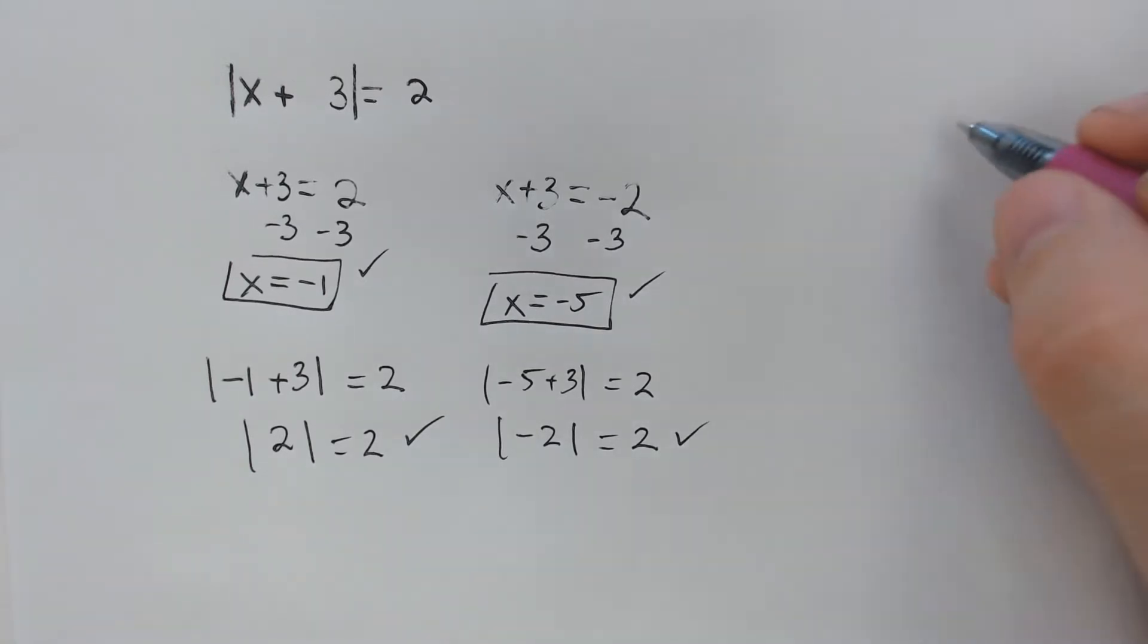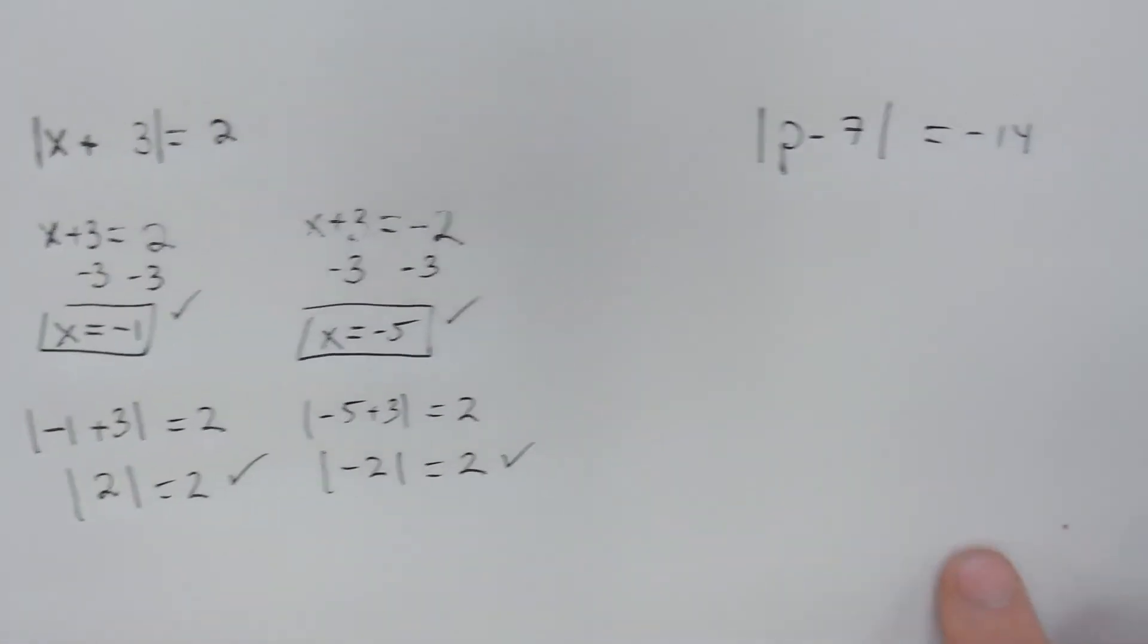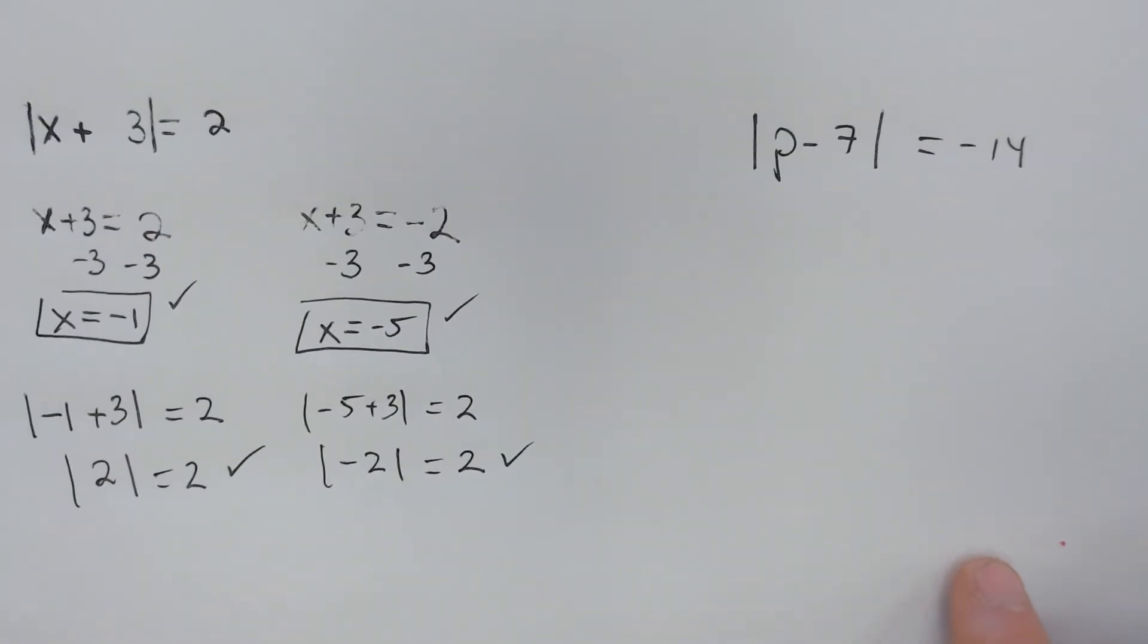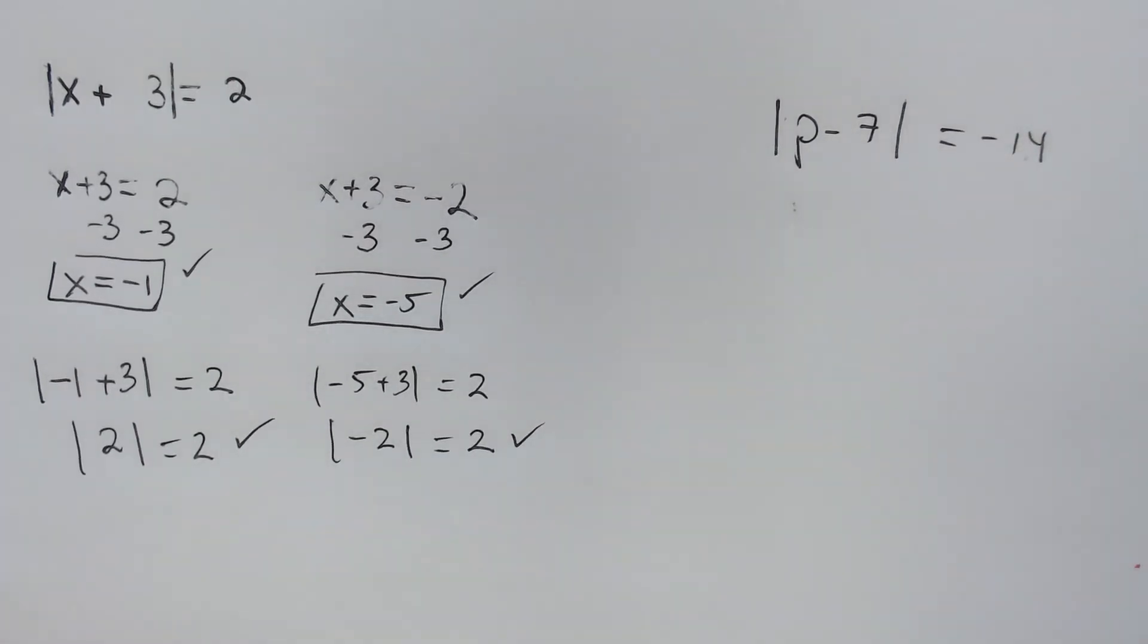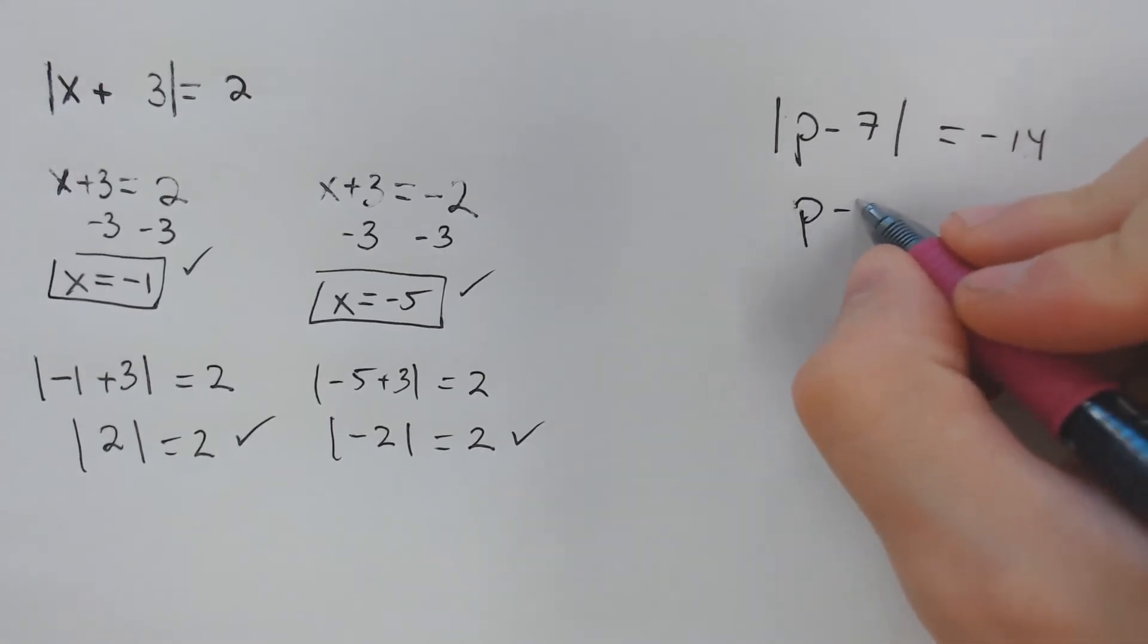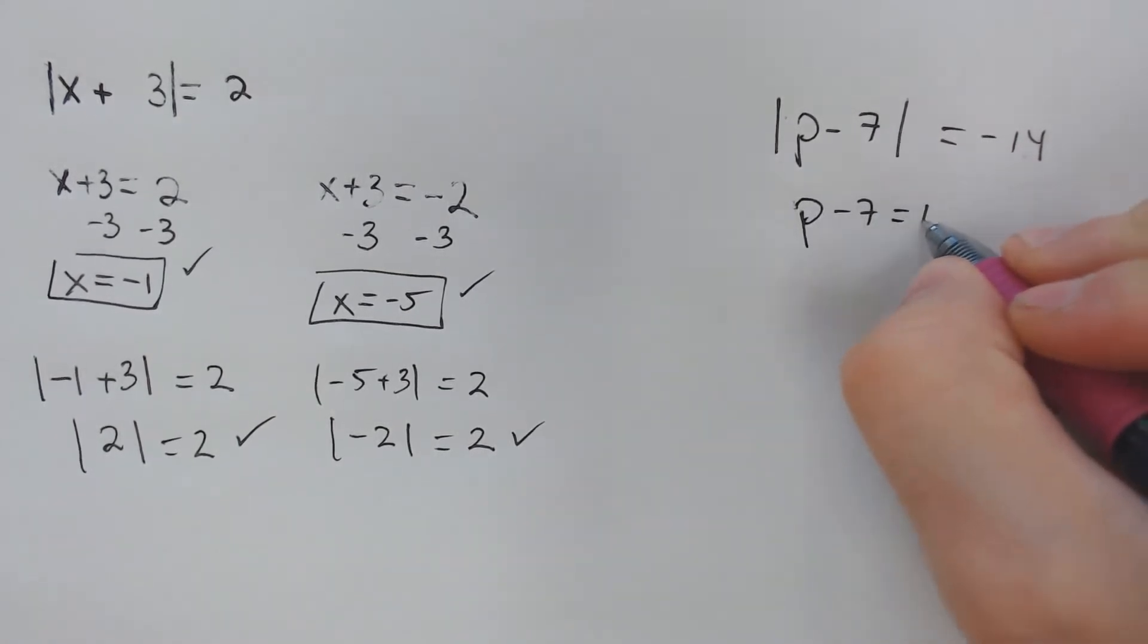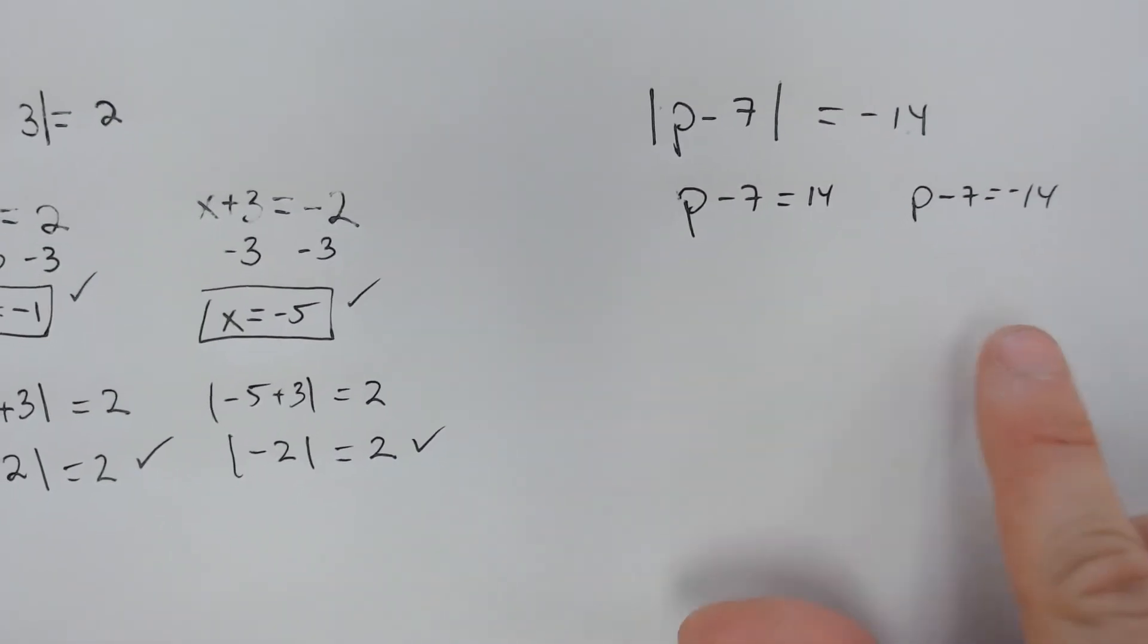You should be on the lookout for problems that look like this. If we have p minus 7 in the absolute value bars equals negative 14, well, by all means, p minus 7, the absolute value of that might be able to equal negative 14. But if you think, can the absolute values ever equal a negative number? No, they always produce a positive number.